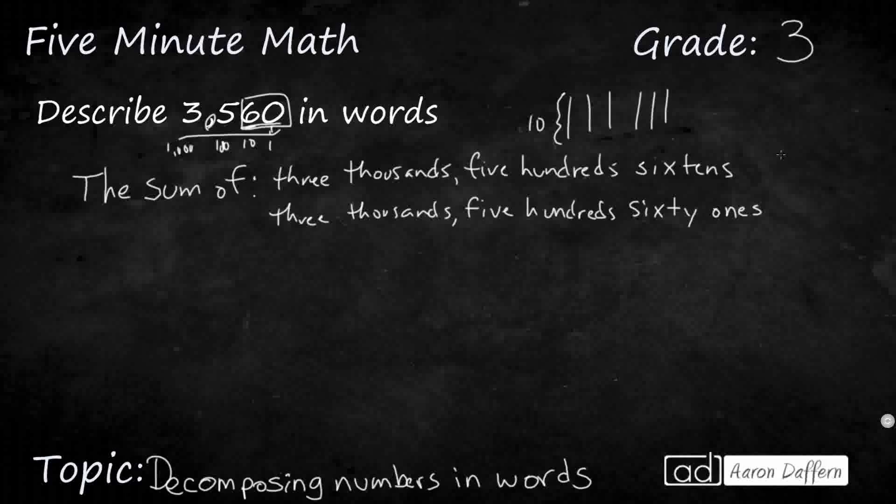Another way to do this would be to take a look at this right here. See that 56 right there? 56 what? Well, once again, 56, and then the last digit's in the tens place. So we could draw it out like this. 3 thousands. And we could say 56. I want to hyphenate that. And those are 56 tens because that last digit is in the tens place.